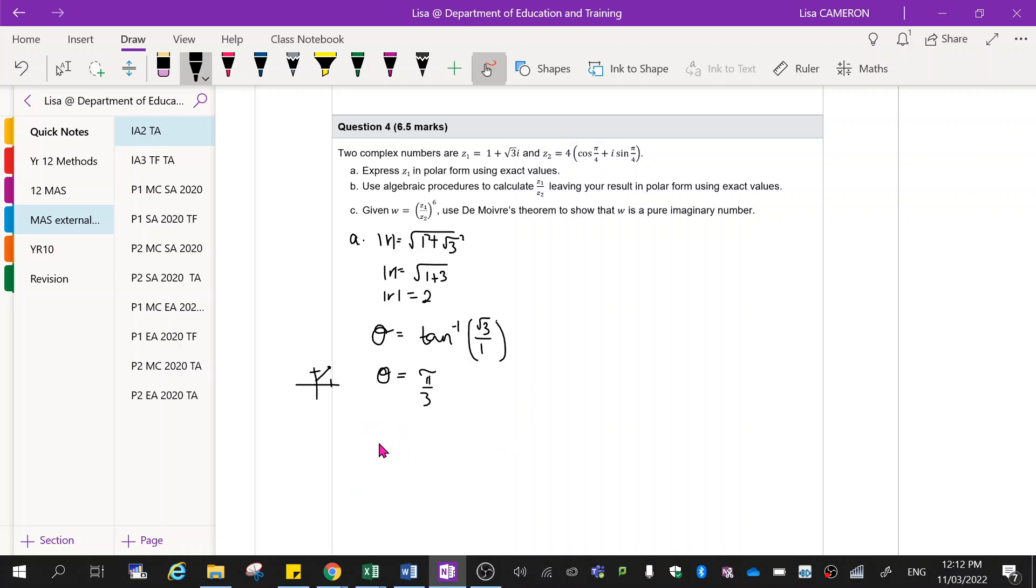So last thing to do is put this into polar form. So z1 is equal to your r component, cis, your argument. Now remember, your arguments always need to be between negative pi up to and including pi.